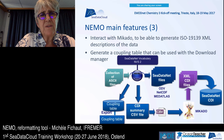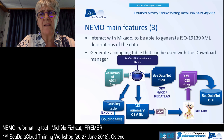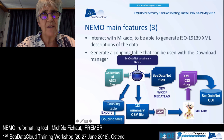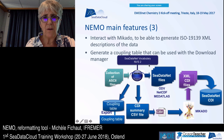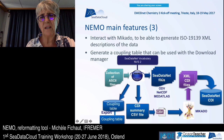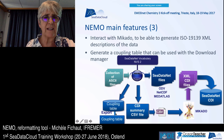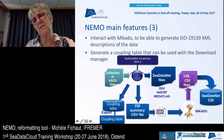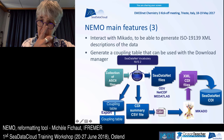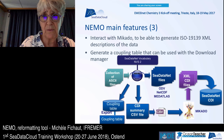An important feature is that NEMO interacts with Mikado to generate the XML description of the data. It is also able to generate a coupling table that can be used by the download manager and the replication manager. While converting your ASCII file to SeaDataNet files, NEMO generates a coupling table embedded in its database that you can export as a flat file, and it can also generate a CDI summary CSV file for use by Mikado.